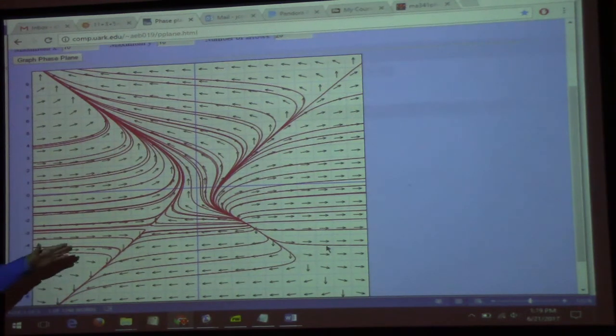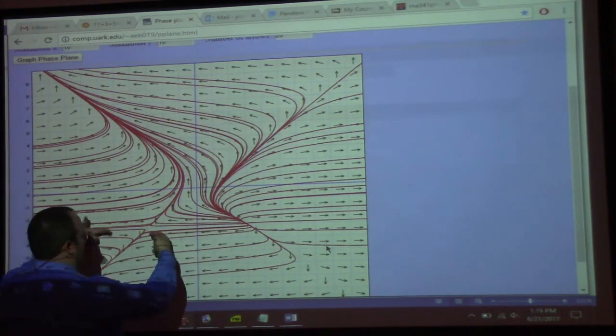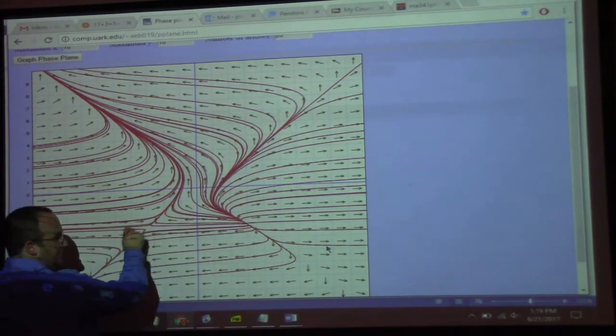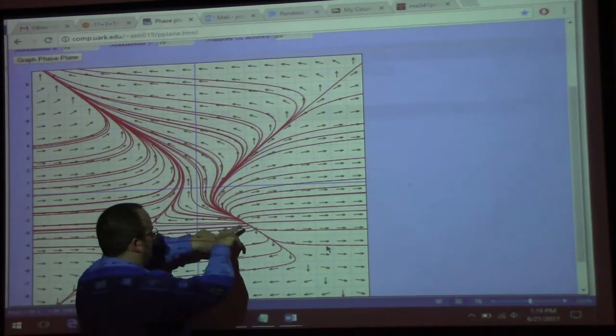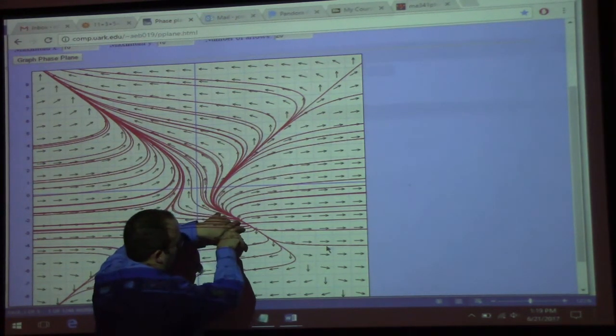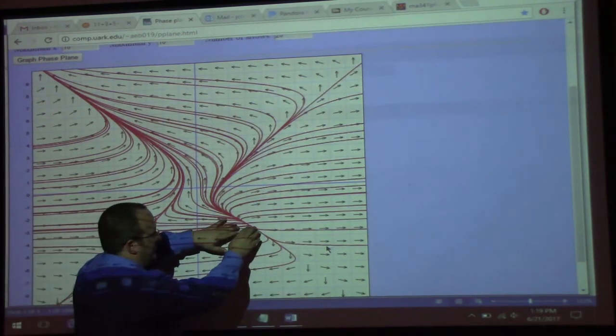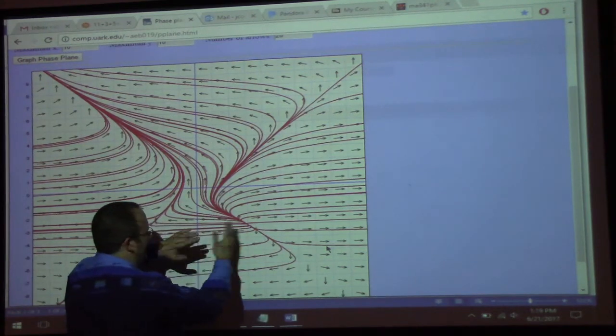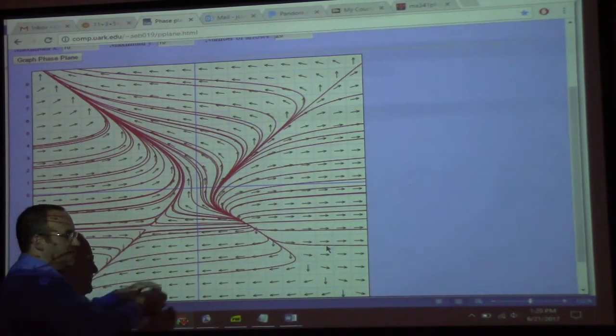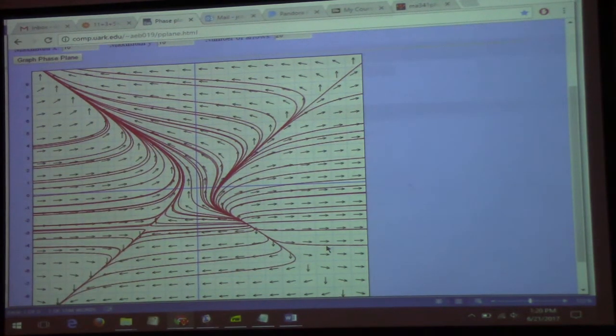Now, what's the nature of these critical points? This one, we're flowing, looks like we're flowing towards it this way, but away from it that way. This is unstable. How about this one? Away, away. So this is unstable saddle. And this is unstable, what do we call it? It's a different kind of unstable. But here the solutions just flow away. Here you have a saddle. So we can use p-plane to look at differential equations to find critical points and to classify their nature.